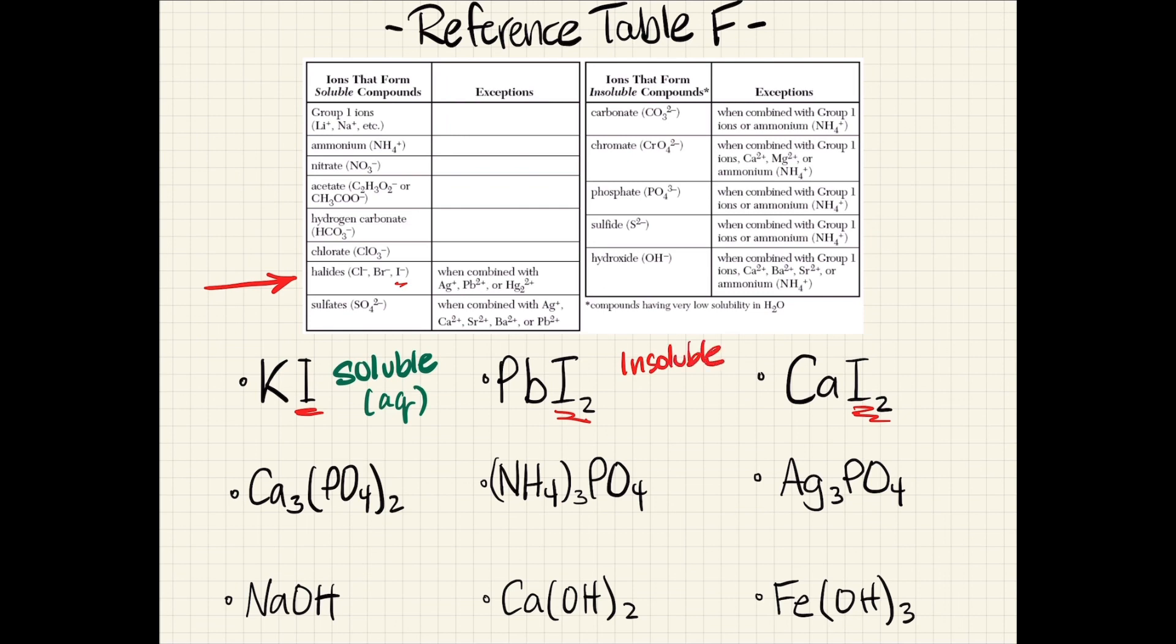The second one is PbI2. We can see that iodine is soluble, but because it has the Pb plus 2 ion, it will form an insoluble product.